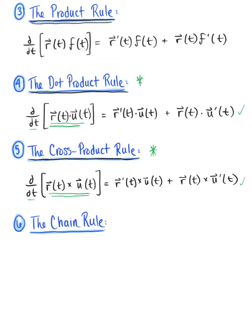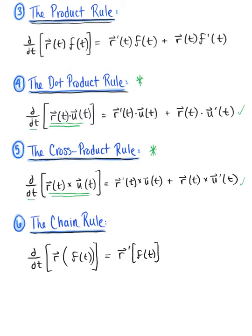Last but not least, property number six is the chain rule. With the chain rule, we differentiate with respect to t the composition of our vector-valued function r with the scalar-valued function f of t, just like a normal chain rule: derivative of the outside function, hold your inside constant — that's the derivative of vector r of f of t — then multiply by the derivative of the scalar-valued function f prime of t.